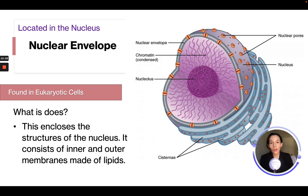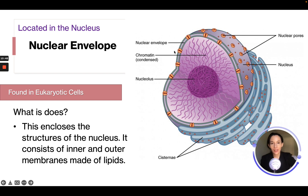The nuclear envelope is found only in eukaryote cells and encloses the structure of the nucleus. It consists of an inner and outer membrane made of lipids — very similar to the plasma membrane. We can see the nuclear envelope here as a phospholipid bilayer with proteins.